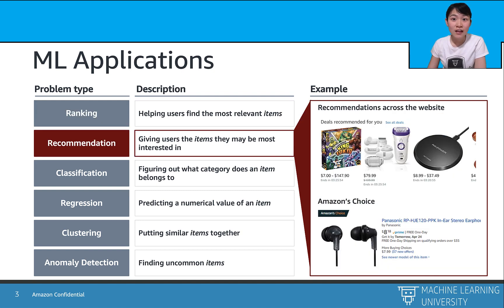Another widely used one at Amazon is the recommendation problem, when we recommend customers the commodities and items they are most interested in.